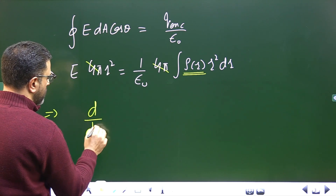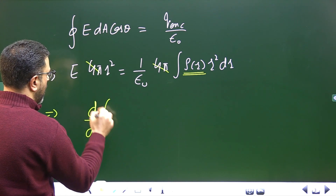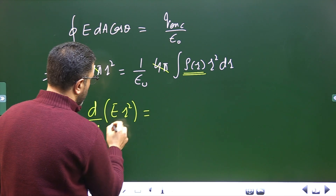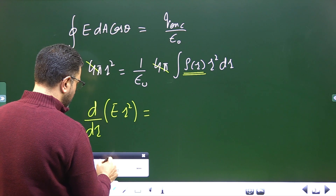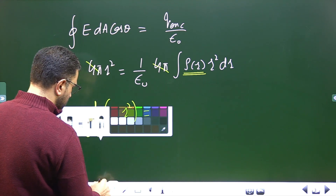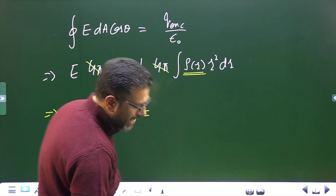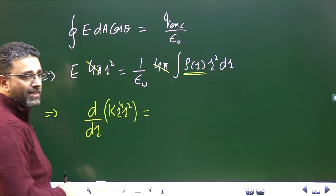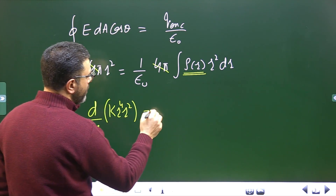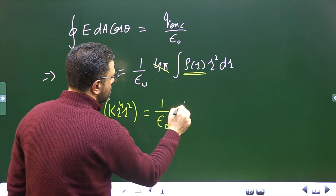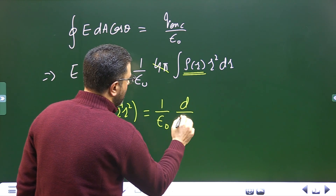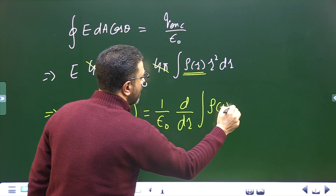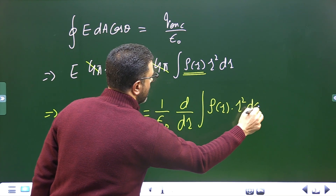We are given that E = kr⁴, so E · r² = kr⁴ · r² = kr⁶. Substituting in: d/dr [kr⁶] = (1/ε₀) · ρ(r) · r². This gives us the left-hand side as 6kr⁵.